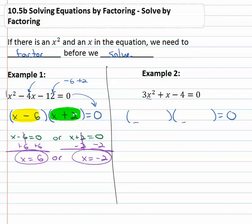Well, first times first has to equal first. The only way to get 3x squared is 3x times x. Last times last has to equal last. The only way to get 4 is 2 times 2. Can we use those to get the plus x in the middle? One of them has to be negative because it was a negative 4. So 3x times 2 is 6x, 2 times x is 2x. That's not going to give us 1x.